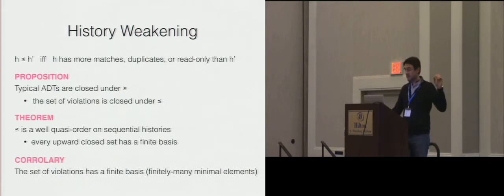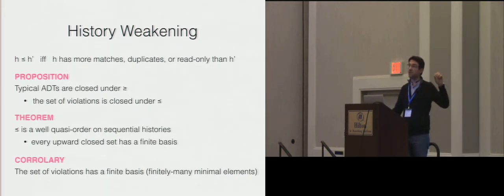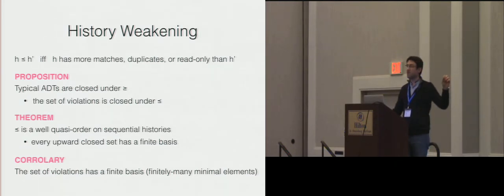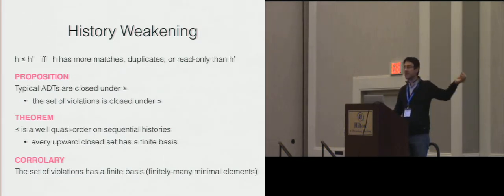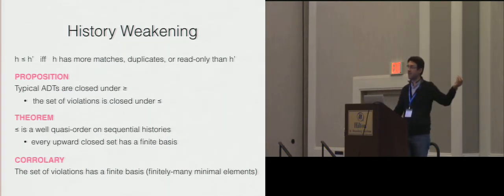An interesting fact proved in the paper is that this order relation is in general a well-quasi-order. The important consequence is that every upward-closed set has a finite basis — a finite set of minimal elements. Since the set of violations is upward-closed, the set of violations, which can be infinite, has a finite set of minimal elements according to this order relation. This corresponds to the formalization of the first hypothesis mentioned at the beginning.